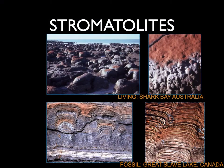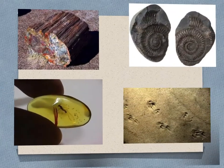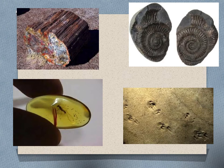Here are some living stromatolites on the top from Shark Bay, Australia. They are mounds of bacteria that catch sand, then migrate to the top, growing very slowly over a long period of time. The bottom images are fossils from Great Slave Lake in Canada, and you can see the striations — the remnants of the bacterial growth.